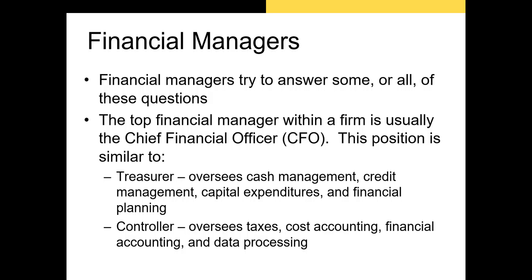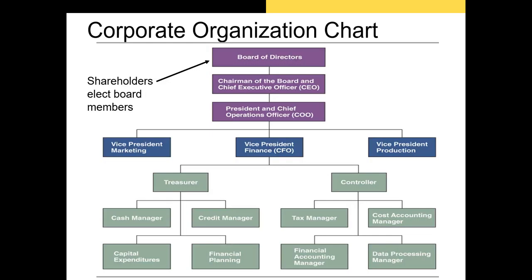The top financial manager in a business is often the chief financial officer, or CFO. The CFO can also be the president or a vice president of the company. Regardless of their actual title, the CFO has two primary roles: first, they have to act as the firm's treasurer, ensuring that the firm has enough cash on hand to pay for daily expenses and operations; second, the CFO must oversee the firm's accounting functions and is responsible for paying the firm's taxes. The CFO or VP of finance role is usually filled by someone with both an accounting and finance background. In smaller firms, financial managers also handle the accounting of the firm, and often the CFO will also be a CPA or certified public accountant.